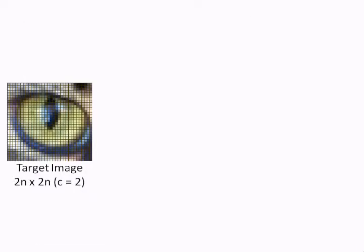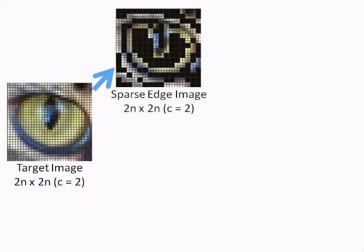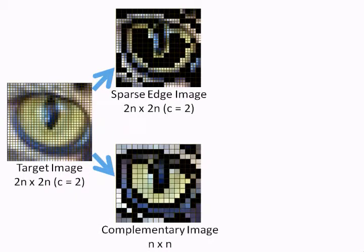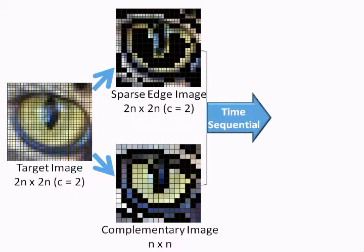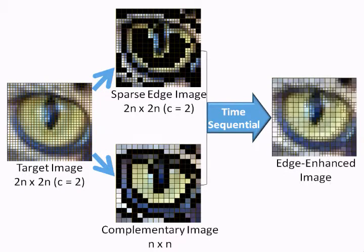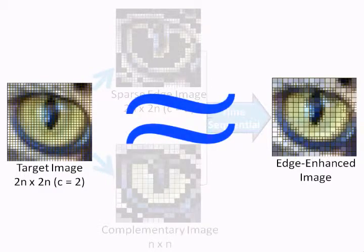We decompose a CN by CN high resolution image into a sparse edge image of resolution CN by CN and a complementary non-edge image of resolution n by n. These images are then projected in a time-sequential manner at a high frame rate to create an edge-enhanced image — an image where the pixel density is not uniform but changes spatially. We observe that this image provides a close perceptual match to the original high resolution image.